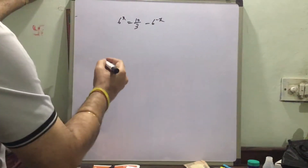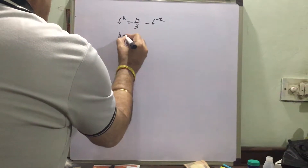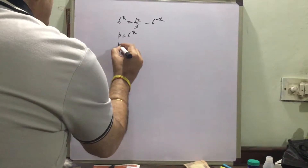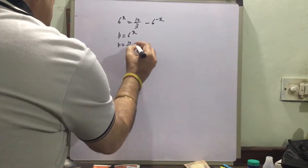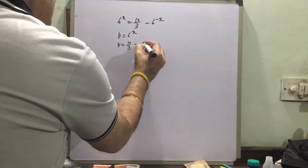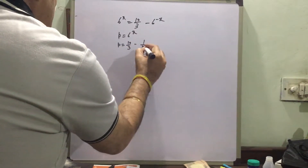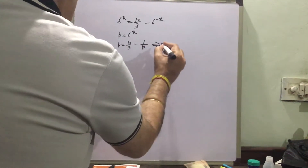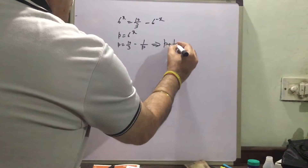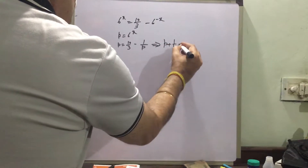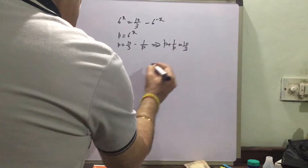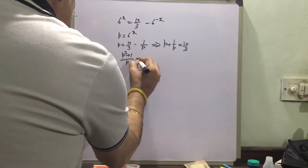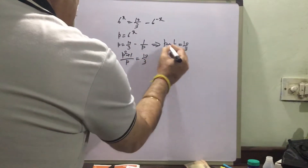To resume, let p be equal to 6 raised to the power of x. We can write this equation as: p is equal to 10√3 minus 1 upon p. This gives p plus 1 upon p equal to 10√3.